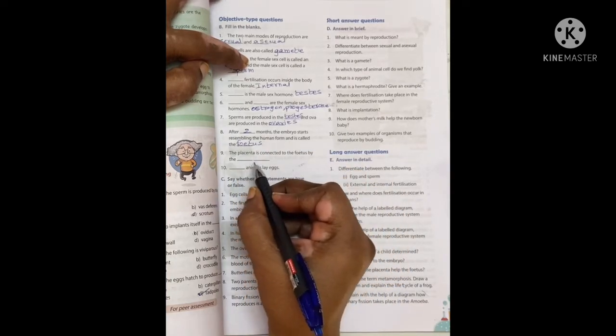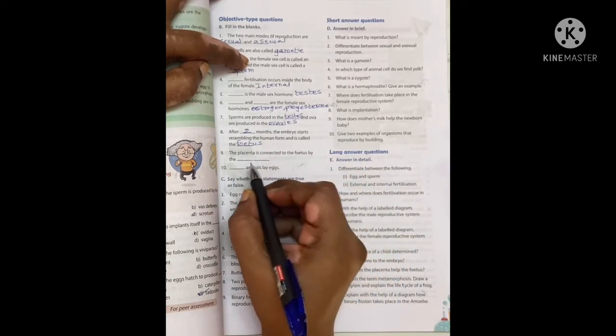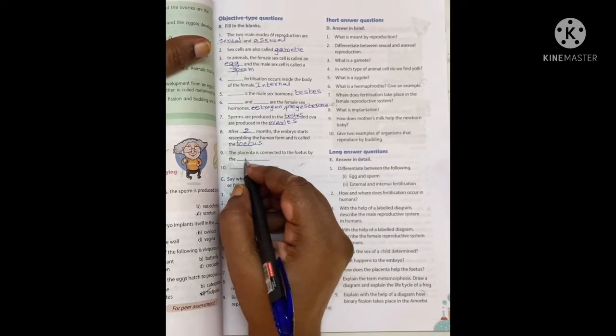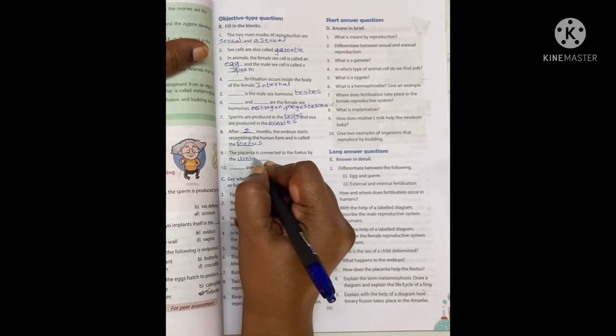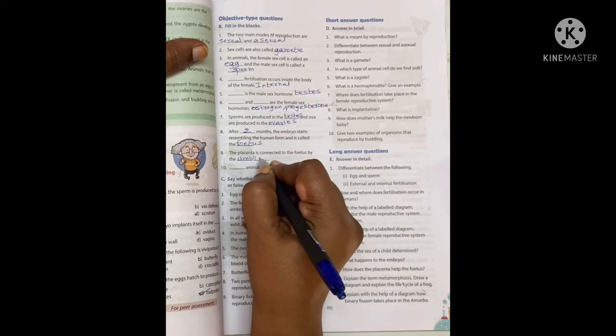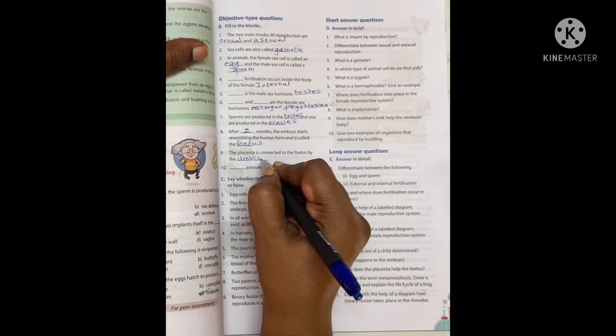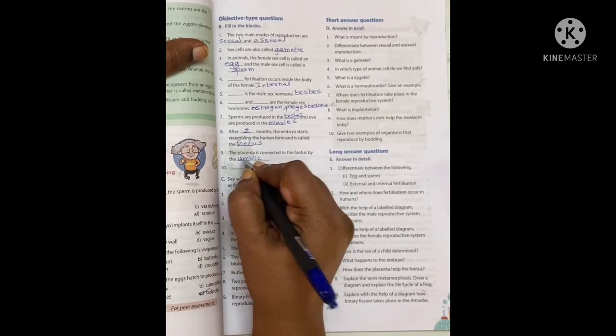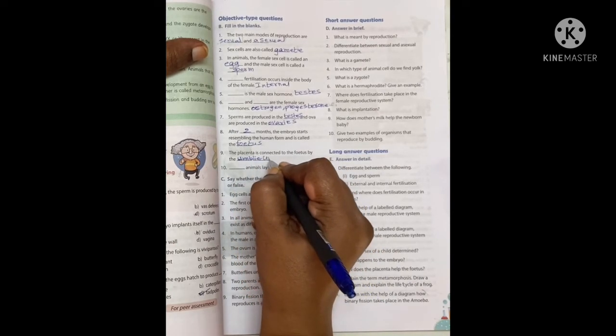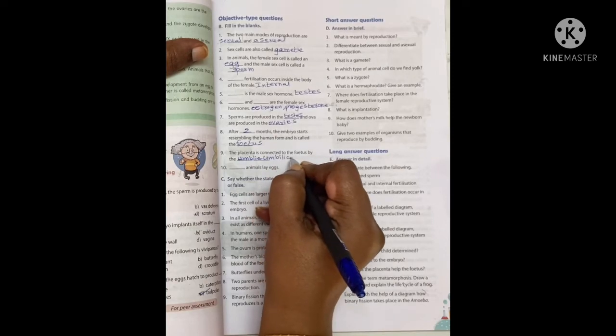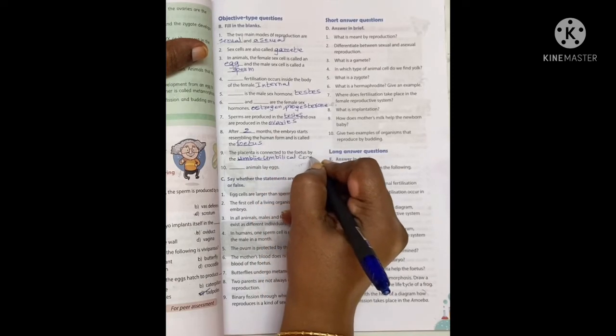The placenta is connected to the fetus by the umbilical cord.